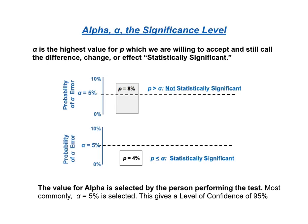The last of our four concepts to explain is alpha, the level of significance, or the significance level. In step two of the five-step method, the person performing the test selects a value for alpha — most commonly 5% is selected. This provides a 95% level of confidence of avoiding an alpha error. As the illustration shows, alpha defines the dividing line between values of p which indicate a statistically significant difference, change, or effect, and those which don't.